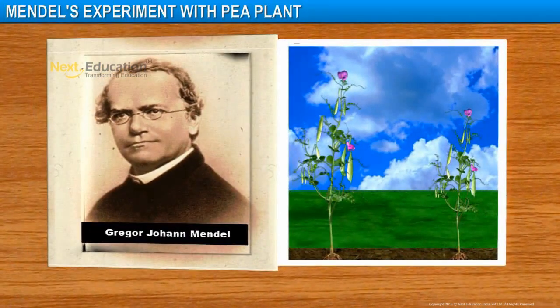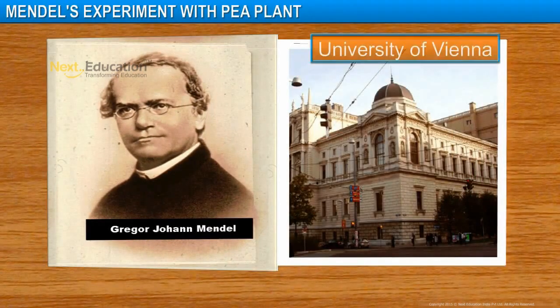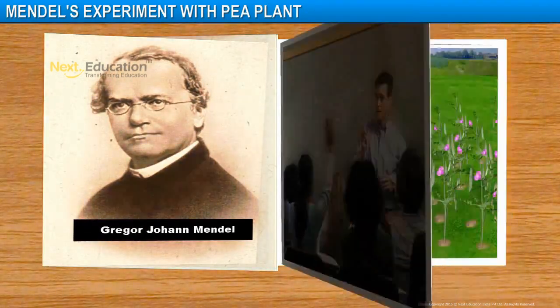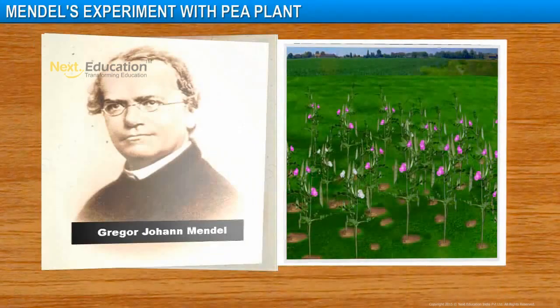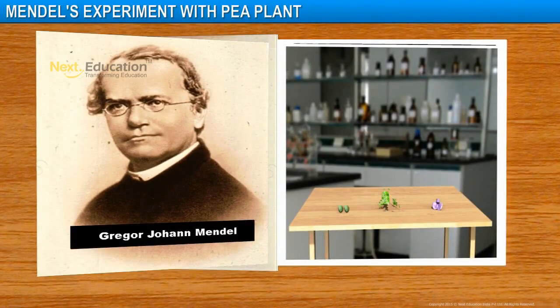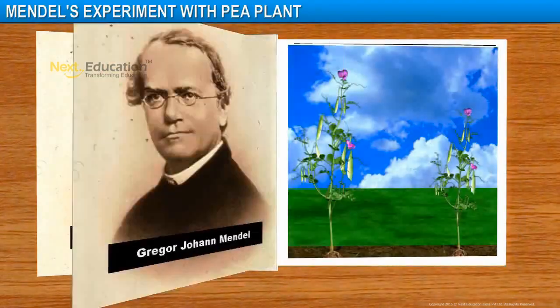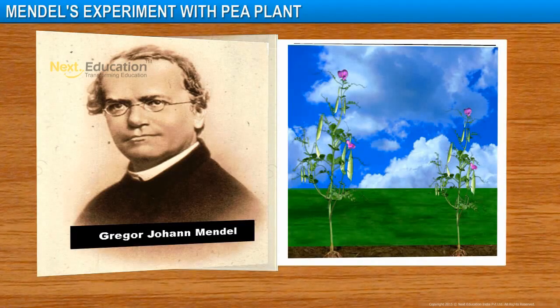Mendel was educated in a monastery and studied science and mathematics at the University of Vienna. He wanted to be a teacher, but he failed the teaching examination. However, he did not lose hope. He returned to the monastery and started growing pea plants in the garden. Mendel blended his knowledge of science and mathematics to keep count of the pea plants exhibiting a particular feature in each generation, and arrived at the laws of inheritance.